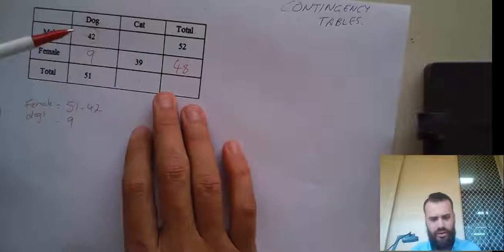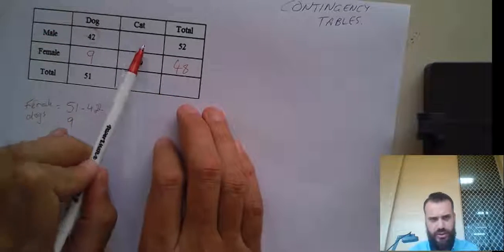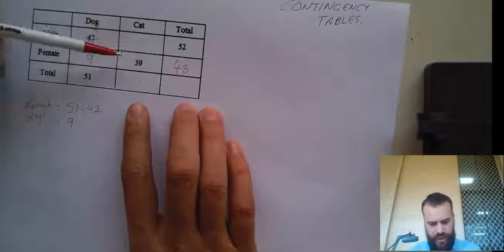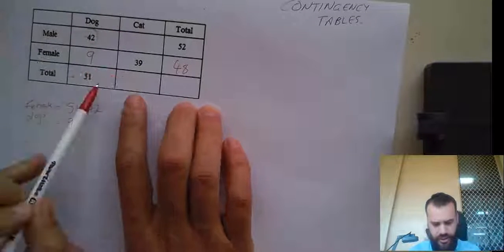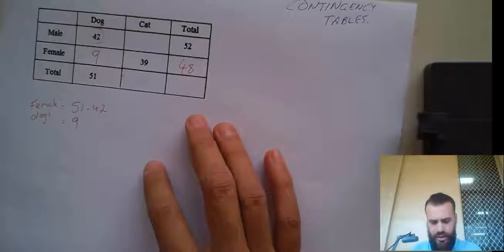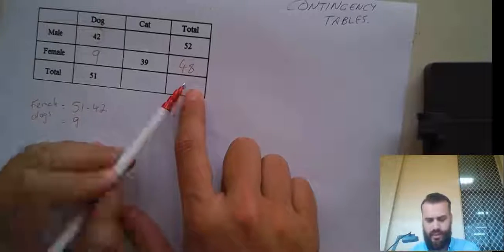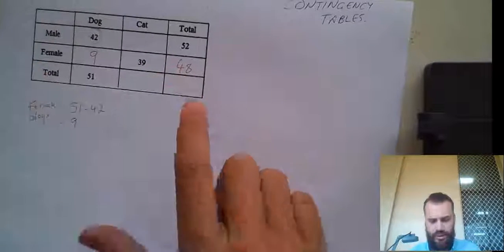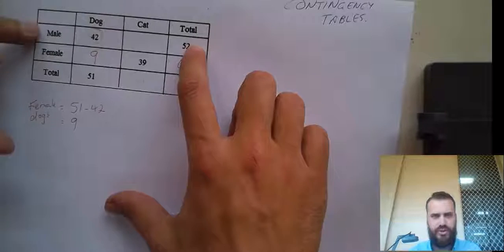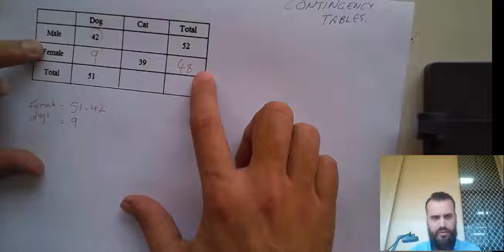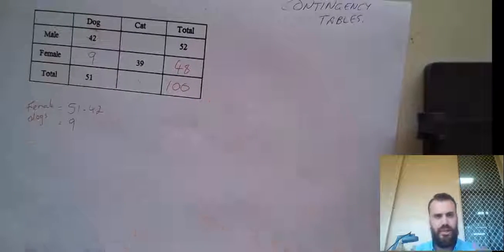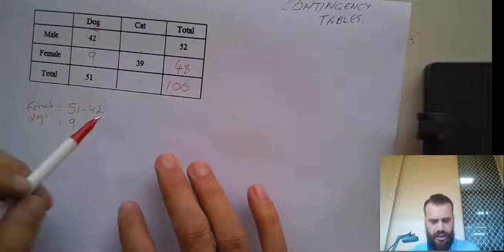You can look around here and figure out this number because there are two values given. You can't figure out this number because there's only one value here. But you can figure out this number here because you can add these two together. There are a total of 52 males and a total of 48 females, so altogether there are 100 things in this table.